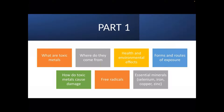Today we're going to talk about: what are the toxic metals, where do they come from, what are the environmental and health effects, how do you get exposed, how do toxic metals cause damage and free radicals, and what happens to the essential minerals like selenium, iron, copper, and zinc — some of which are actually in the heavy metal category of the periodic chart. How do we discern if they're causing a problem, or are these toxic metals robbing essential minerals from our body?